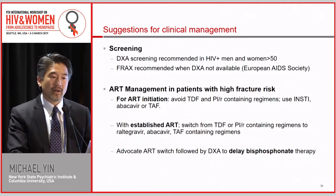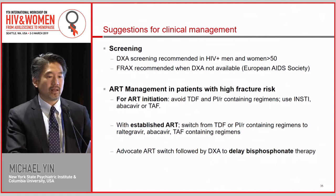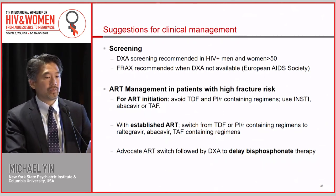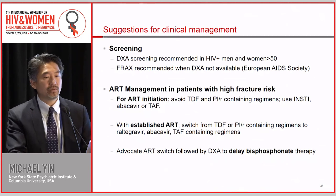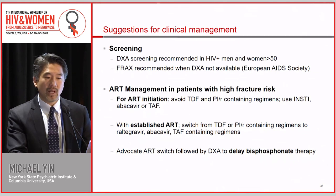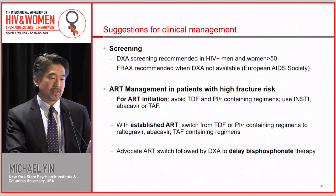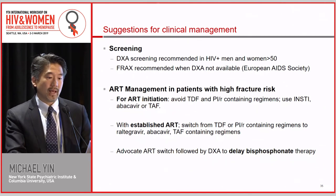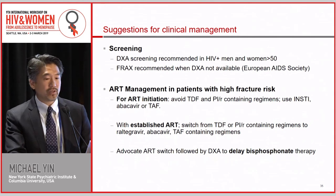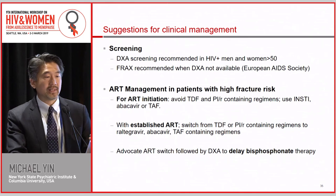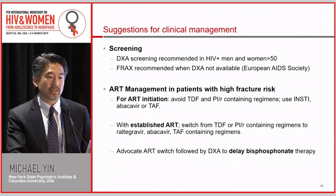In summary, for screening: DEXA in men and women over the age of 50 when possible. There is a recommendation from the European AIDS Society to use FRAX — an online fracture risk calculation tool — when DEXA is not available. For ART initiation, avoid TDF and protease inhibitor-containing regimens; use integrase inhibitors, abacavir, or TAF when you can. Switching from established ART will gain one to two percent of bone density and may delay the need for other therapies like bisphosphonates.